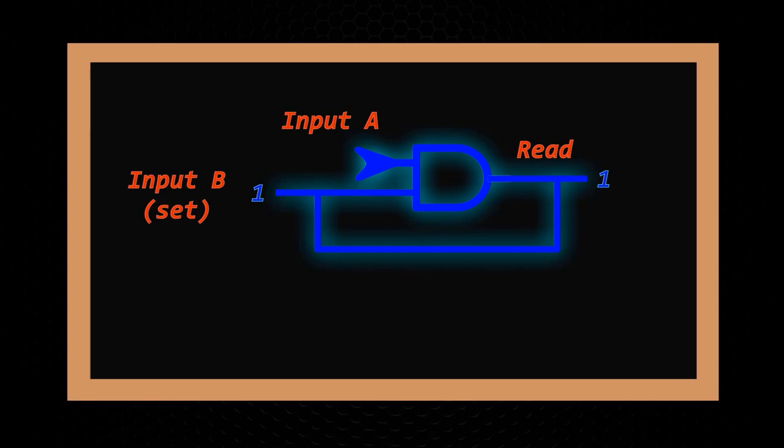If, however, we apply current to input B, this turns on the output. And because the output is fed back into input B, we can then remove the current from input B and it will remain on. Essentially, the output is feeding input B back into itself in this feedback loop. And so what you get is a gate that remembers that at some point in the past, current was applied to input B. And this is the basis for computer memory.